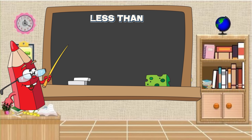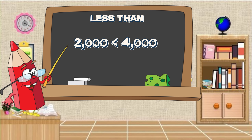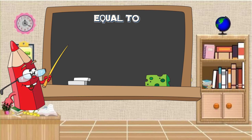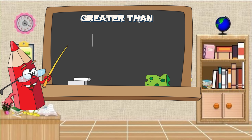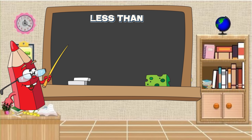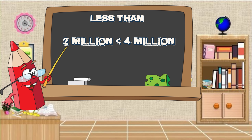Next, less than: two thousand is less than four thousand. Equal to: one thousand is equal to six hundred plus four hundred. Greater than: nine hundred is greater than eight hundred. Less than: two million is less than four million.